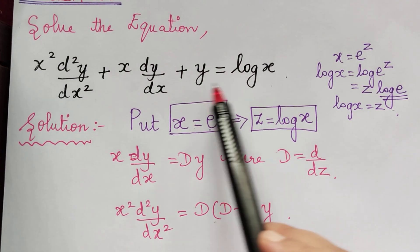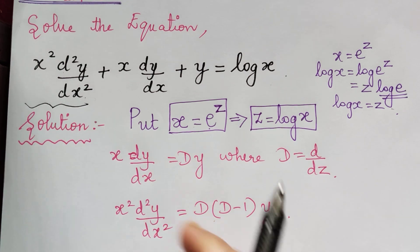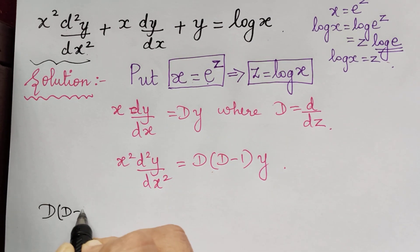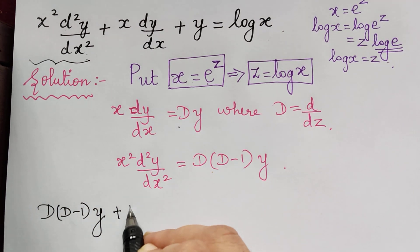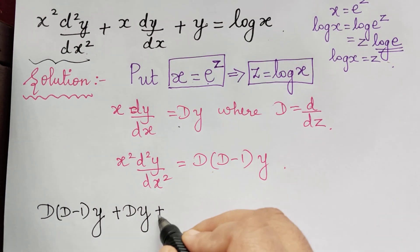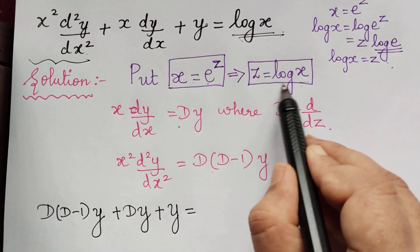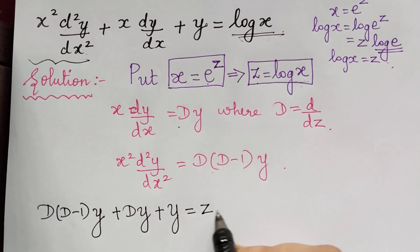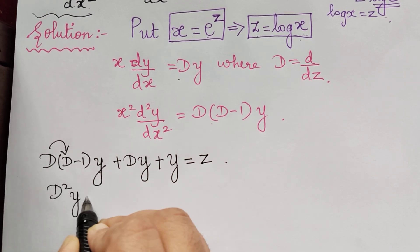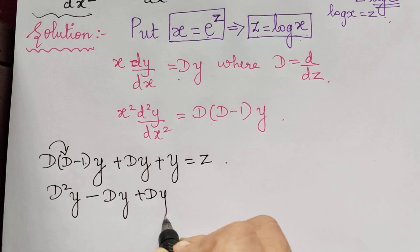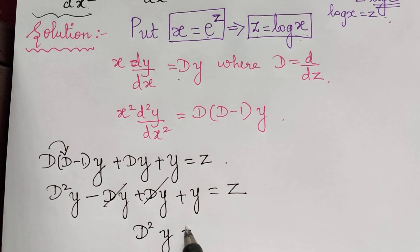The given equation now becomes: x squared d squared y by dx squared is replaced by D(D minus 1)y, and x dy by dx is replaced by Dy, so we have D(D minus 1)y plus Dy plus y equals z. Expanding, D squared y minus Dy plus Dy plus y equals z. The two Dy terms cancel, giving D squared y plus y equals z.